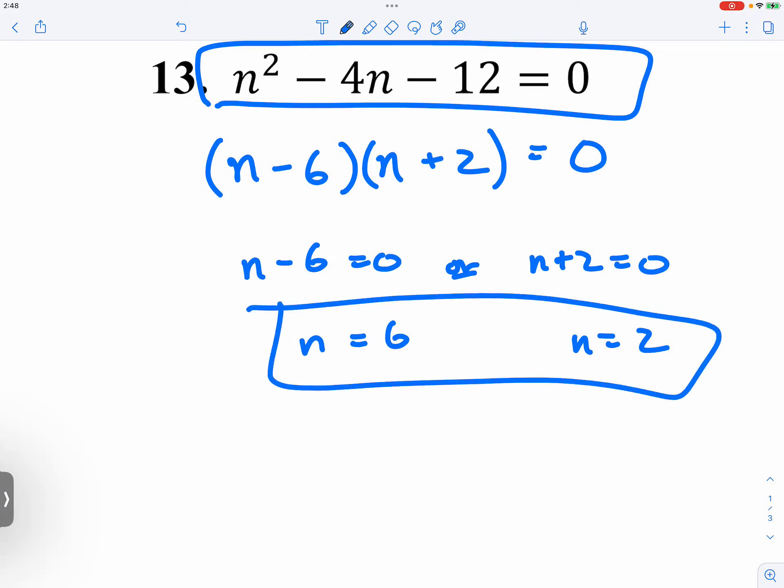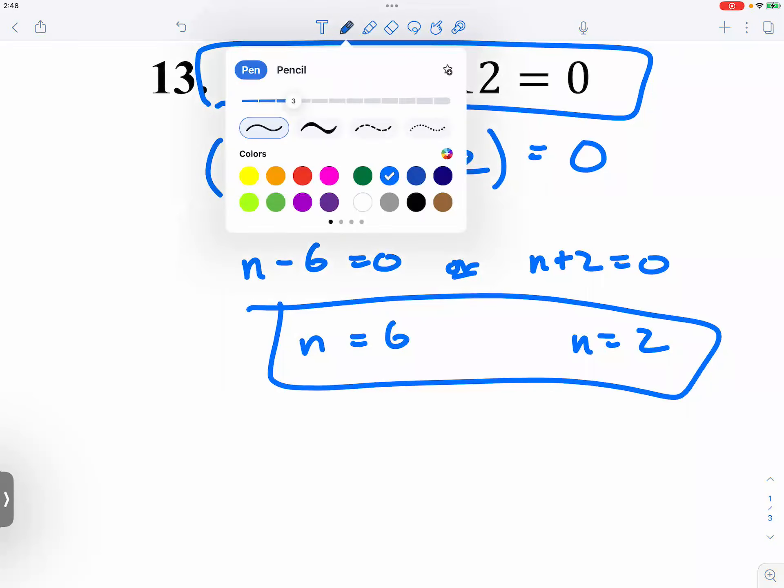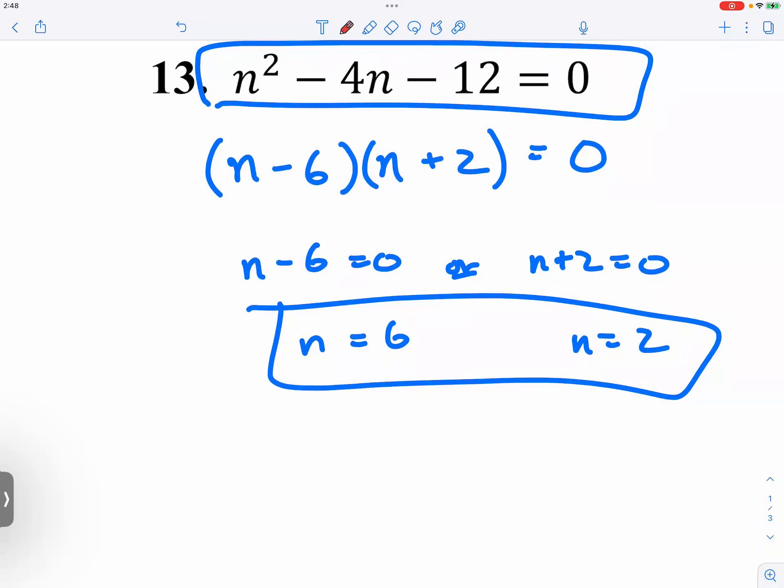Some common mistakes I've seen in the past is that some people would look at this and they would say n is equal to negative 6, which is not correct. It's very easy to make that mistake because our brain, by default, is like what you see is what it is. So it's extremely easy to confuse our brain.